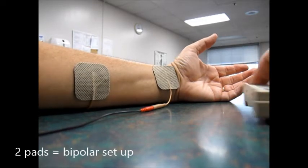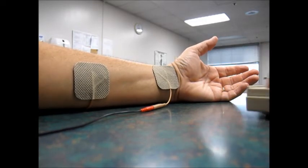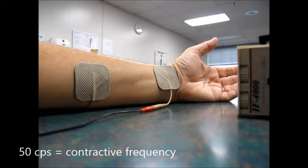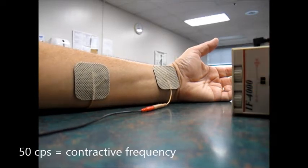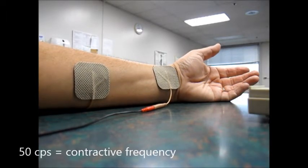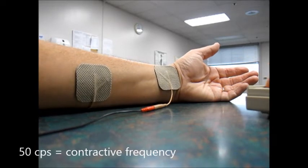It's set right now to a frequency of 50 to cause contraction, and the dials are set so that it's set up for bipolar and on continuous, so I'm going to turn it on and off, and you'll be able to see the difference between the two.